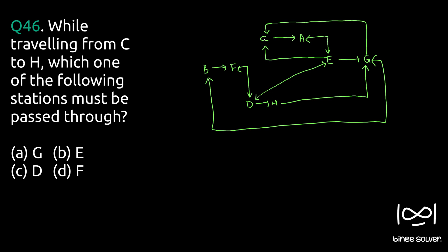From C the only path is to A. From A there is a two-way path to E. So from C we go to A and then to E. From E we have multiple choices — we can go to G, back to C, back to A, or to D. If we go to G, the only path is back to C, so that's not useful. The only productive path is E to D, then D to H. So the path is C → A → E → D → H.